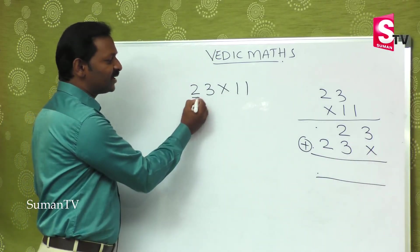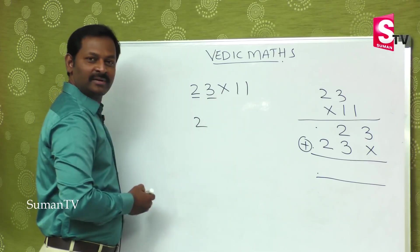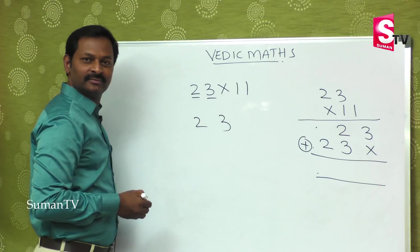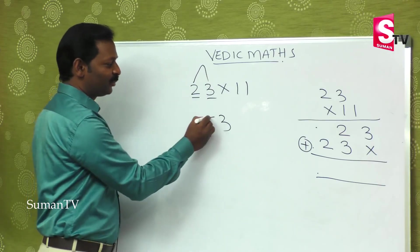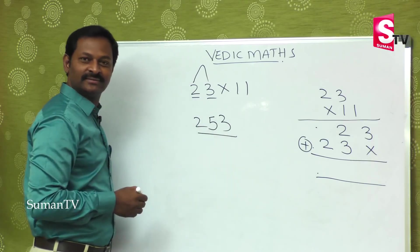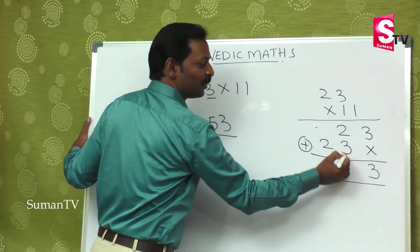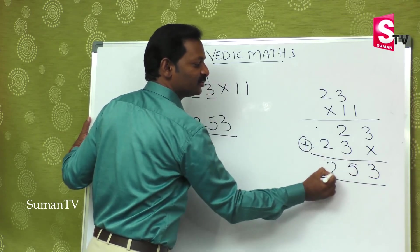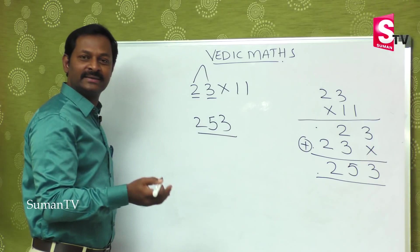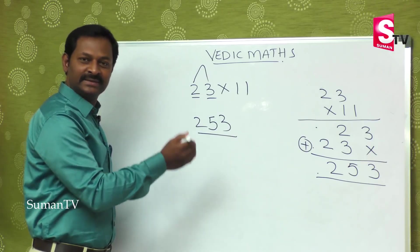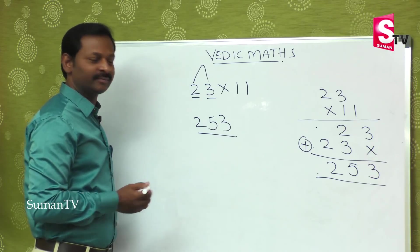What is the first number? 2. What is the last number? 3. Add them: 2 plus 3 is 5, put 5 in the middle. So the answer is 253. First digit is 2, middle is 5, last is 3. This is the answer — three steps, and it's done.